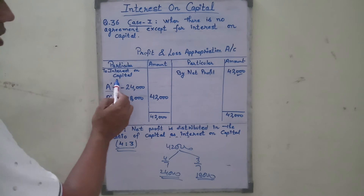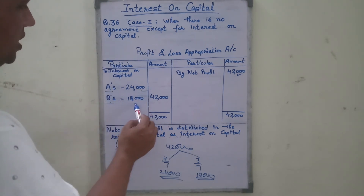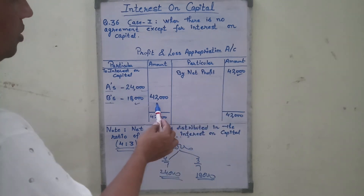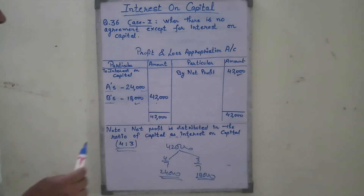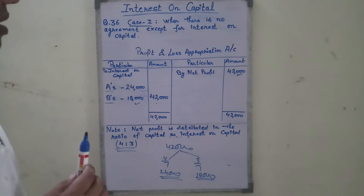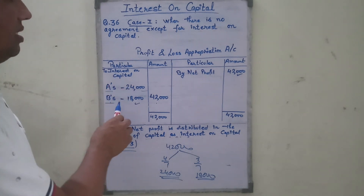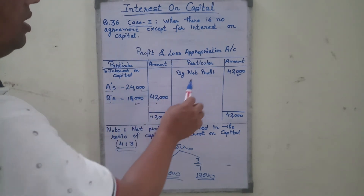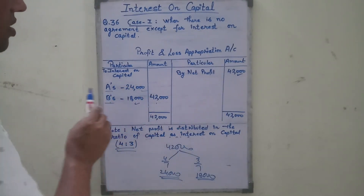We write it as: interest on capital — A's capital is 24,000 and B's capital is 18,000. So the net profit is equal to the interest on capital. In this case, if interest is charged and it results in a loss in the account, then only the net profit is distributed as interest on capital.